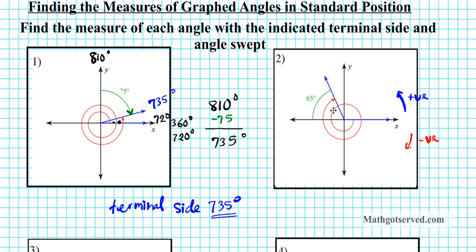We have a complete rotation here. Starting from 0, rotating all the way around clockwise — a full circular rotation in the clockwise direction is negative 360 degrees. Now if you go a quarter of a circle further, this would be minus 90, giving negative 450.